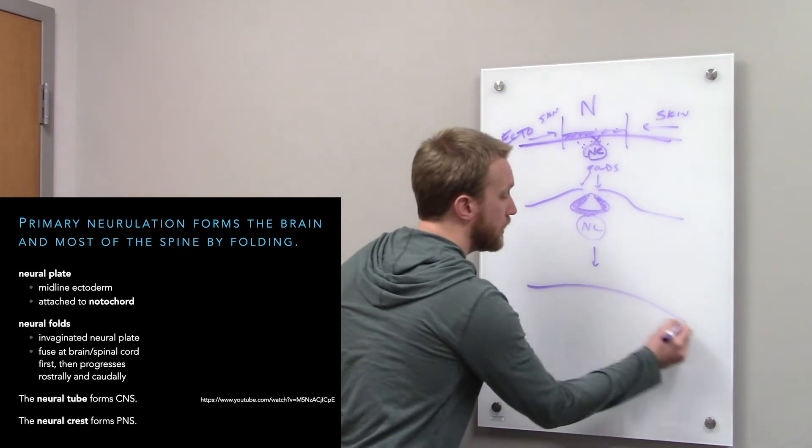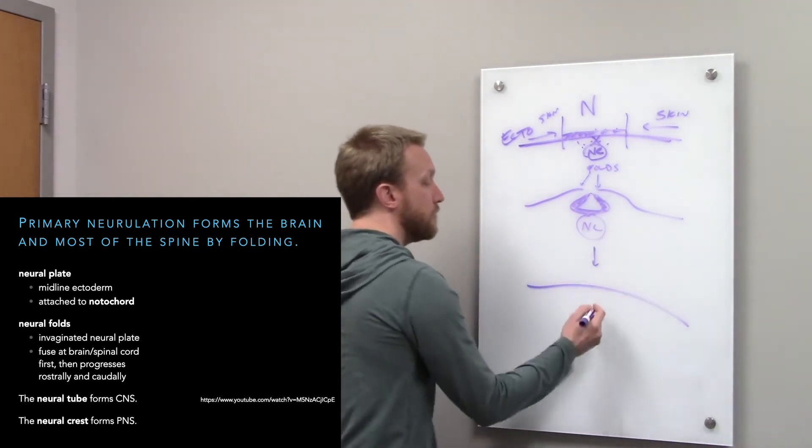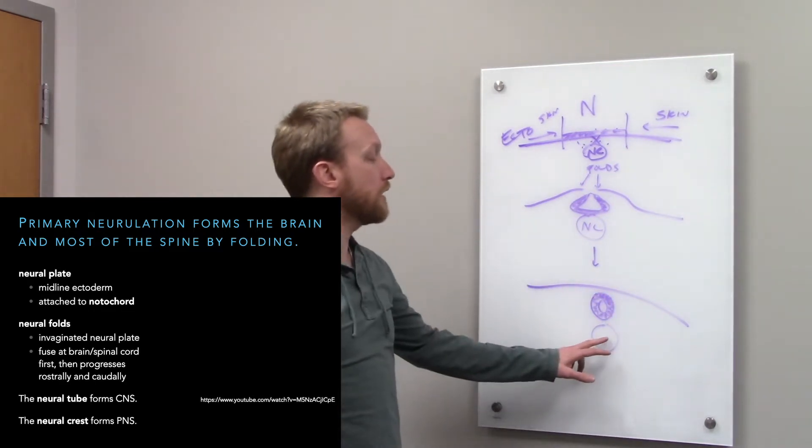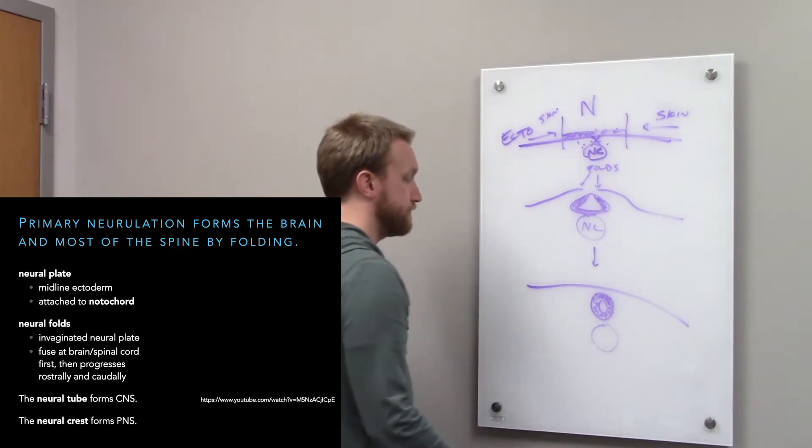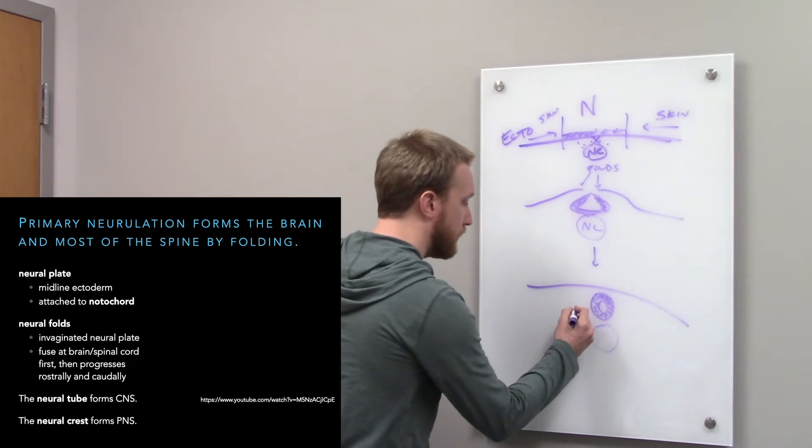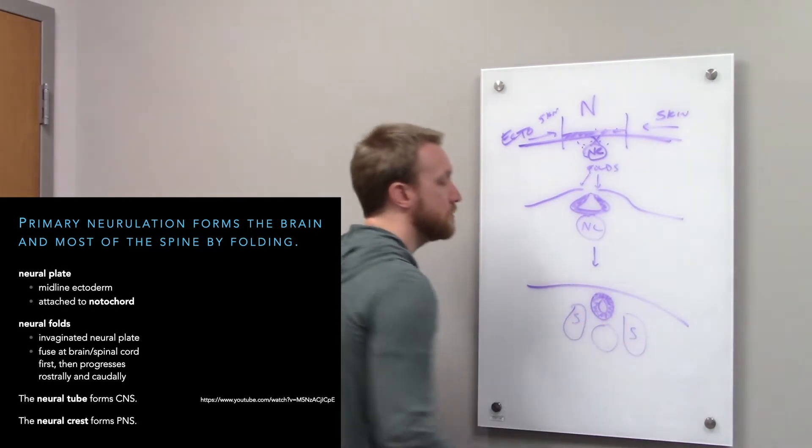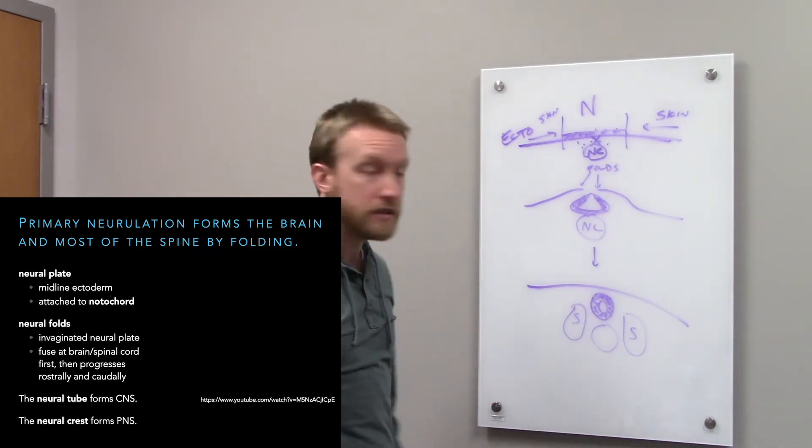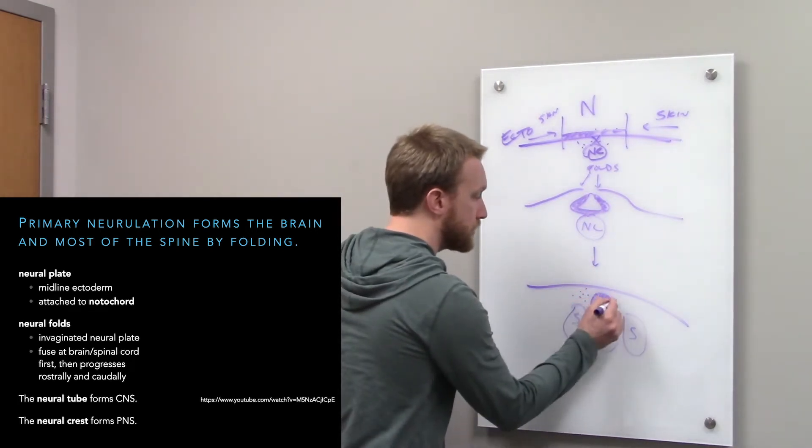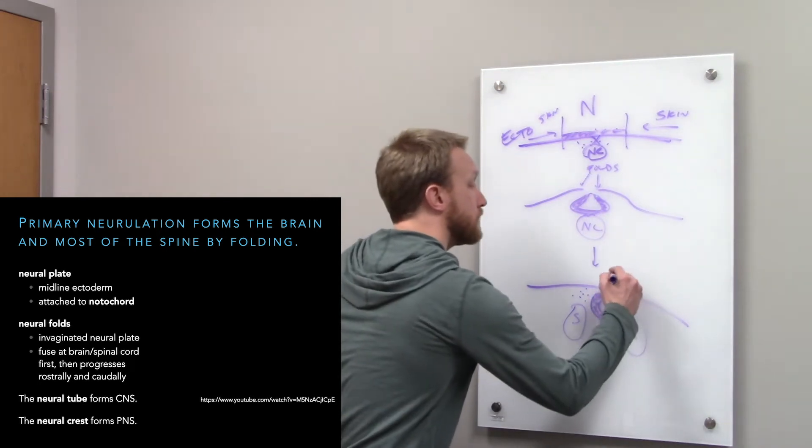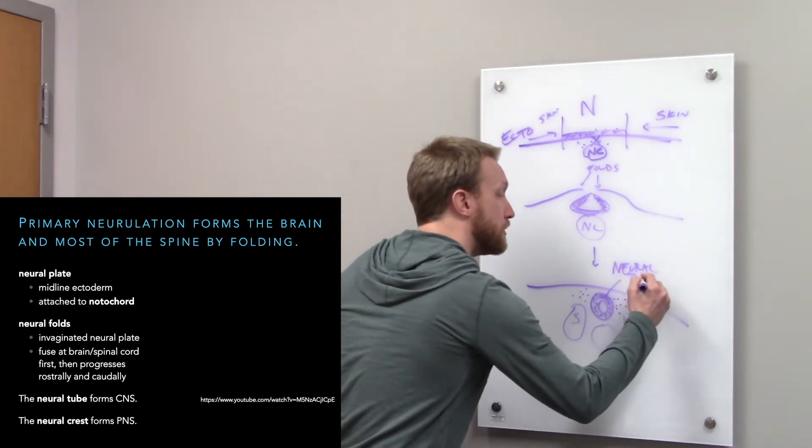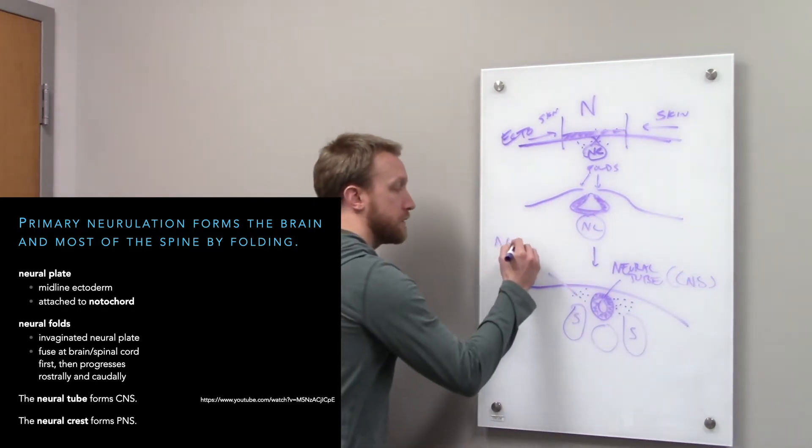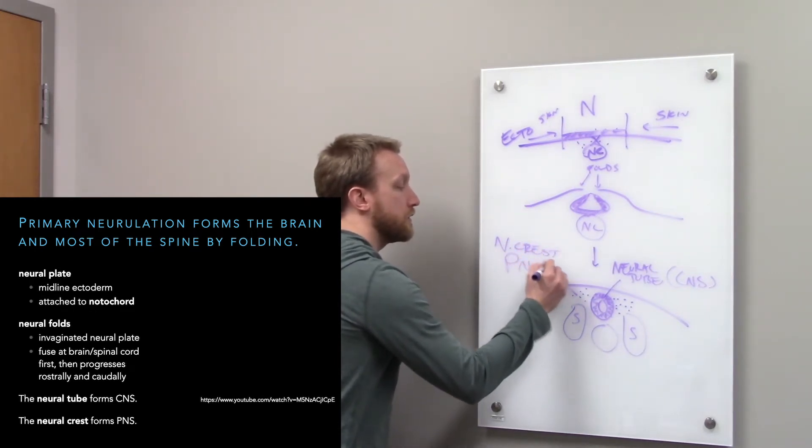If everything goes well, we're going to have a continuous sheet of skin, and buried underneath it we'll have our neural tube. The notochord is going to stick around for a while and eventually form the centrum or the vertebral body. And then we'll have some somites. The somites create the musculoskeletal structures at each spinal level. When you slice bread, you leave some crumbs. Same thing here. Instead of crumbs, we've got neural crest. The neural tube forms the central nervous system. The neural crest forms the peripheral nervous system.